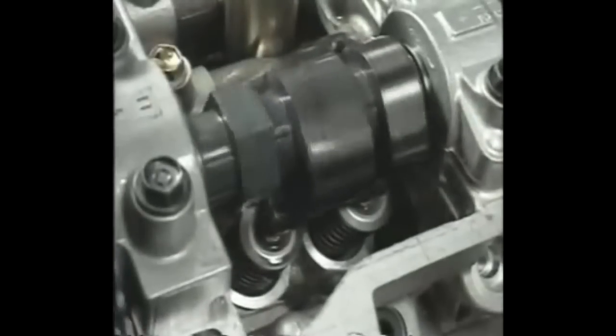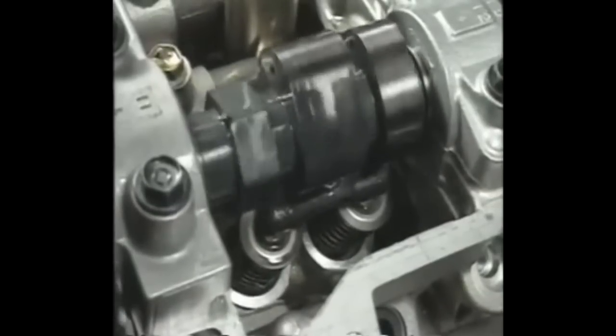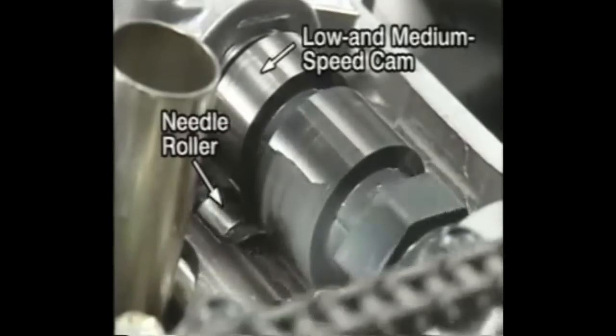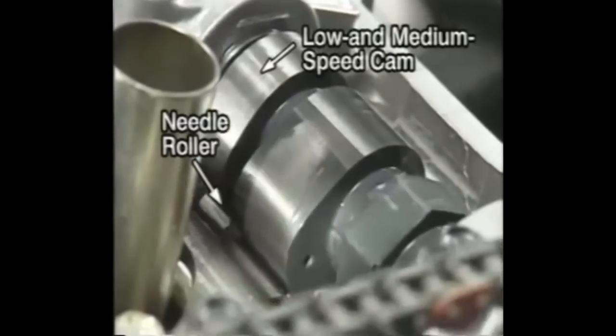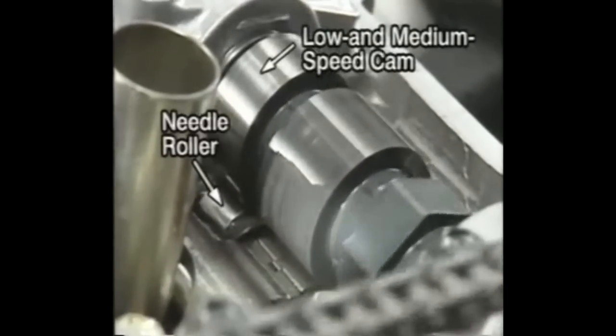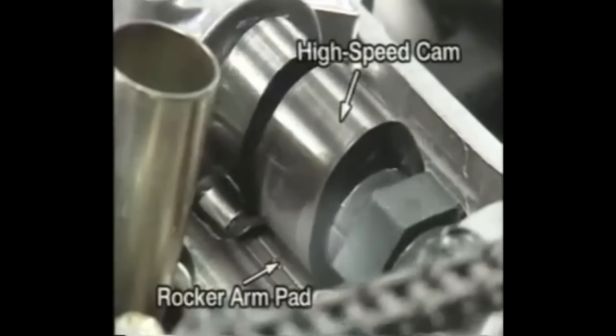At low to medium engine speeds, the movement of the low and medium speed cam is transmitted via the rocker arm needle rollers to push the rocker arm down in order to push the two valves open. Simultaneously, the high-speed cam also pushes the rocker arm pad in the rocker arm.